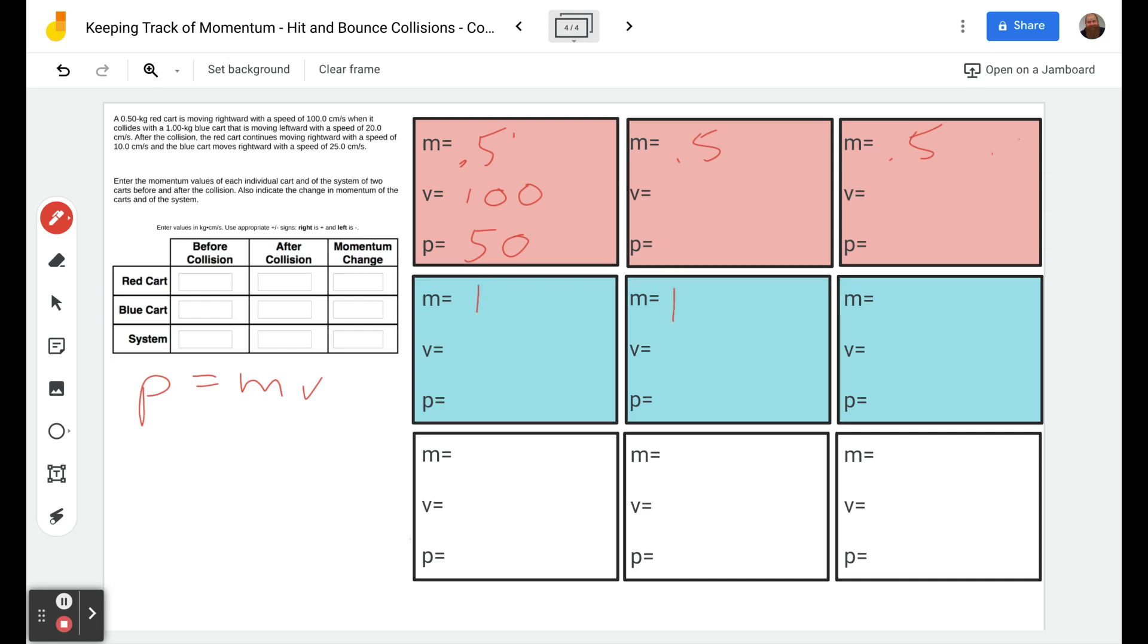The blue cart is moving leftward, so leftward is our negative direction, with a speed of 20 centimeters per second. So 20 beforehand—20 times 1 gives us negative 20 kilogram-centimeters per second. After the collision, the red cart continues moving rightward with a speed of 10, so this is positive 10, and the blue cart moves rightward with a speed of 25.